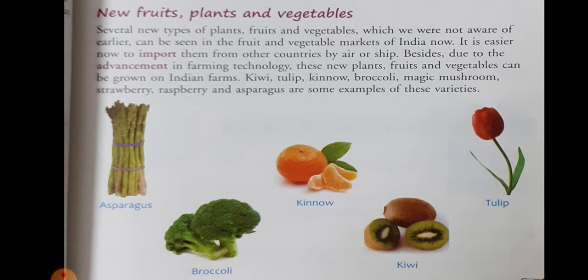Let us see some examples. Some examples are kiwi, tulip, broccoli, quinoa, magic mushroom, strawberry, raspberry, and asparagus. These are the examples of these varieties.